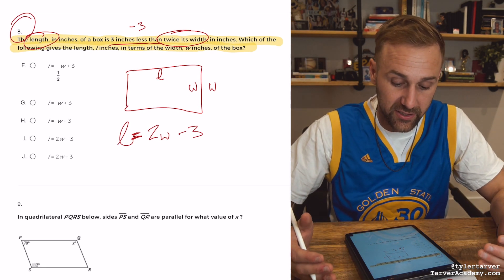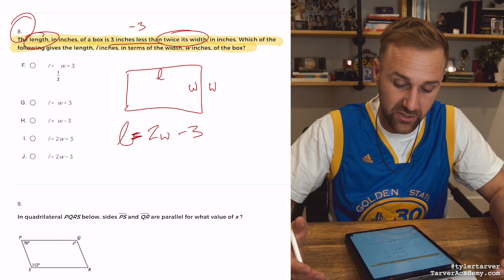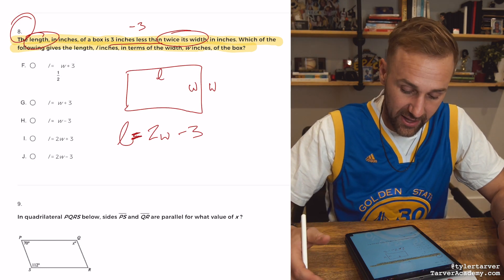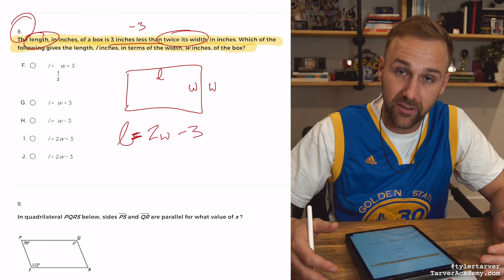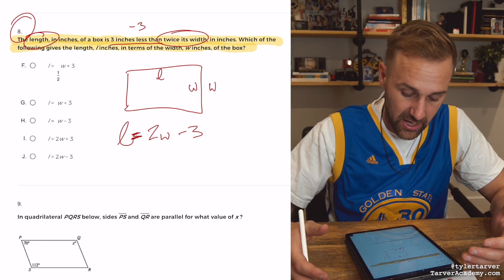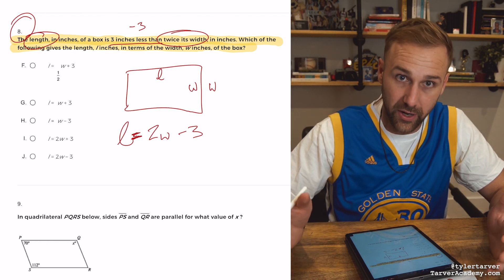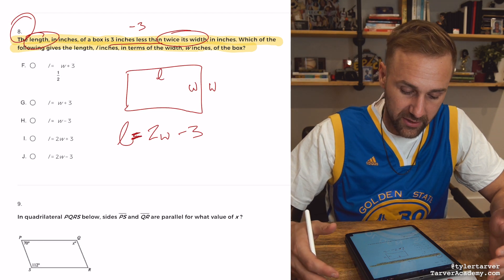It says, the length in inches of a box is three inches less than twice its width in inches. Which of the following gives the length, L, inches, in terms of the width, W, which means we want W by itself. Or, sorry, we don't. We want L by itself. In terms of W, of the box.